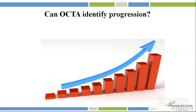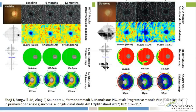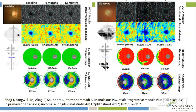Coming to our next question: can OCTA identify progression? This was a study by Shoji et al., who did a longitudinal study comparing the rate of macular vessel density loss in POAG and in healthy eyes. They found that the rate of vessel density loss was significantly different from zero in POAG eyes compared to healthy eyes. However, the rate of GCC loss was not significant in any of the groups. The vessel density dropped from 50 to 44, but there was not a significant change in RNFL or macular thickness. This study was done over a short period of around 12 months.